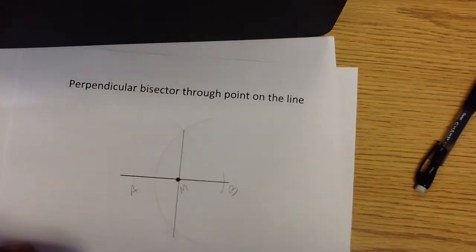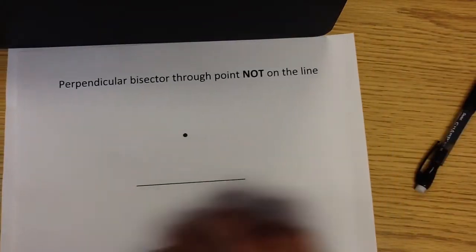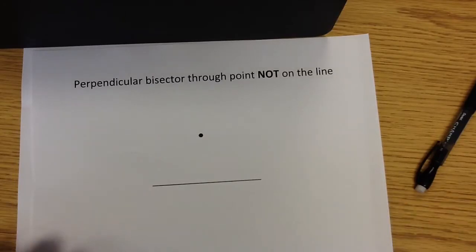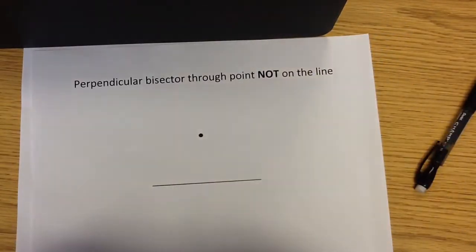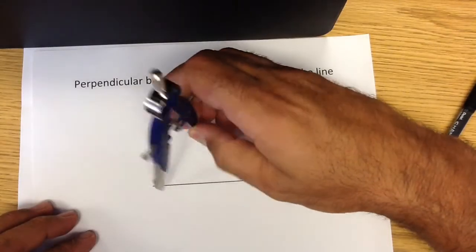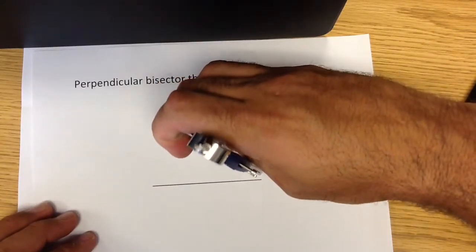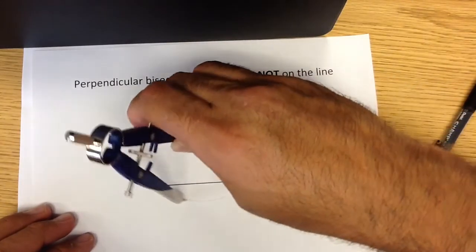And then the last example that we have for this video is a perpendicular bisector through a point not on the line. So one of the things that you want to do is you want to poke at the point and we need to draw a compass arc or an arc that crosses my line twice.